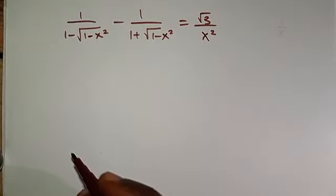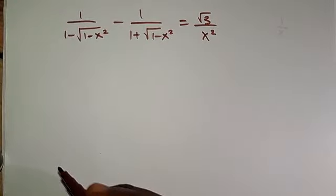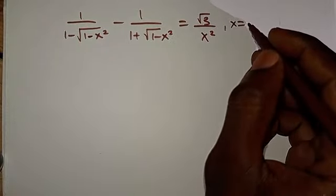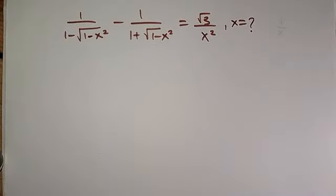Hello, good viewers — you are highly welcome. Let's see how we are going to unveil the solution to this problem. I want to know what the value of x is. We are having: 1 over (1 minus √(1−x²)) minus 1 over (1 plus √(1−x²)) equals √3 over x².